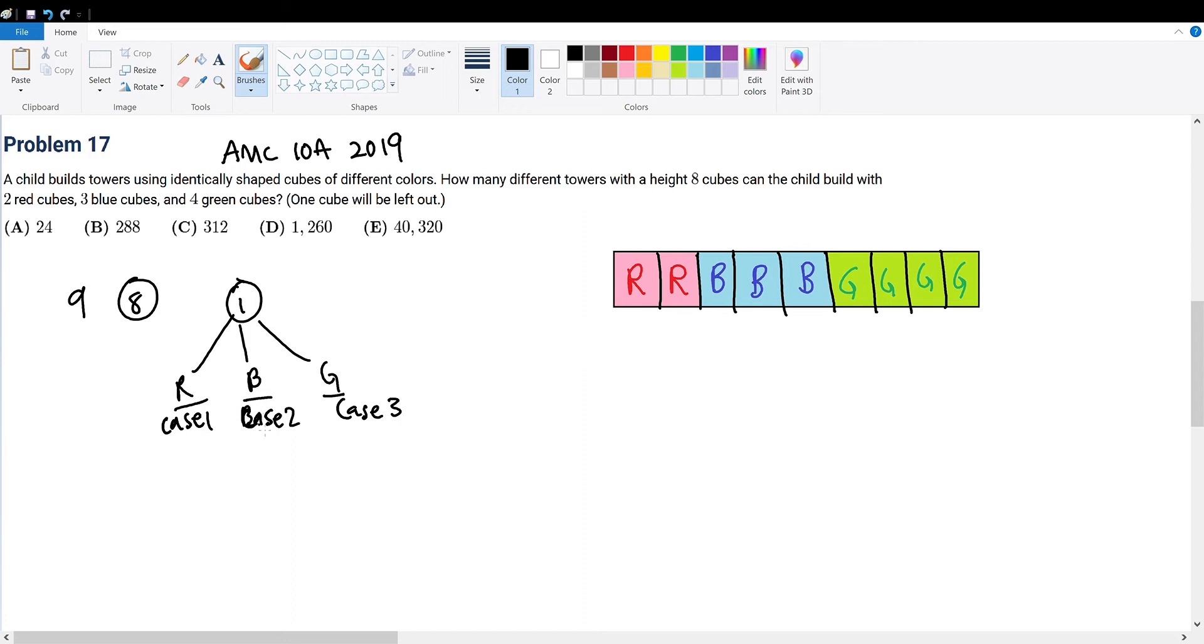We can begin with case 1, when we exclude a red cube. If we exclude a red cube, how many blocks do we have to work with? We have 1 red, 3 blue, and 4 green, which sums to 8.